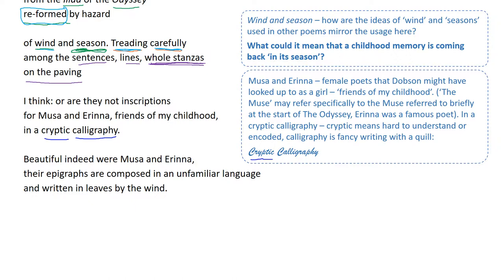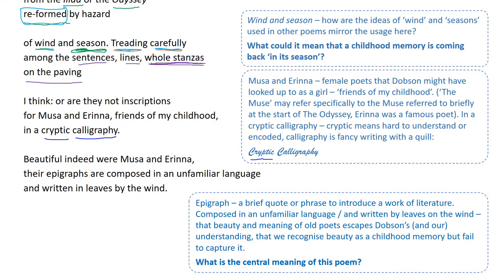The muse might refer specifically to the muse at the start of the Odyssey, while Irina was a famous Greek poet in her own right — a real person. Cryptic means hard to understand, and calligraphy is fancy writing — something cryptic is hard to understand, a code hard to break, meaning hard to grasp. 'Beautiful indeed were Musa and Irina. The epigraphs are composed in an unfamiliar language and written in leaves by the wind.' An epigraph is a brief quote or phrase to introduce a work of literature. Perhaps the beauty and meaning of these old poets is escaping Dobson's full understanding — she recognises the beauty but fails to fully capture it.